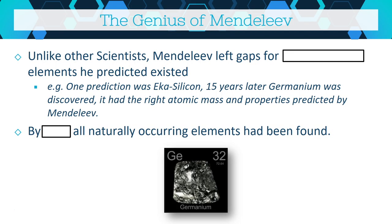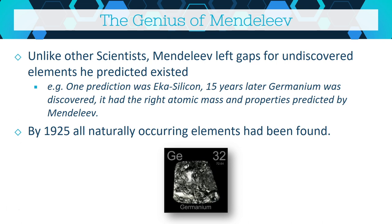Mendeleev left gaps for undiscovered elements. He called one eka-silicon — one step removed from silicon — and 15 years later germanium was discovered with exactly the mass and properties Mendeleev had predicted. By 1925, all naturally occurring elements had been found, so any element discovered after 1925 was actually synthesized rather than found in nature.